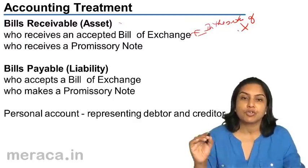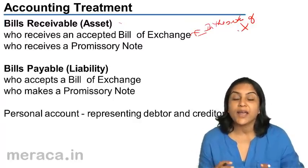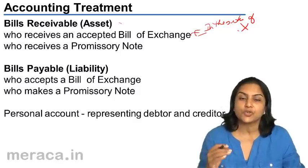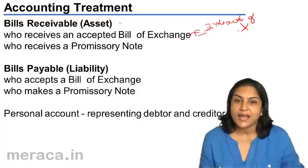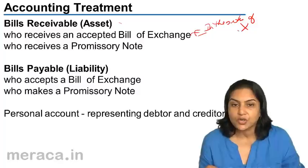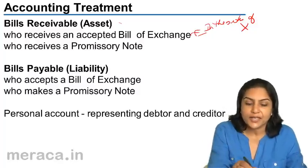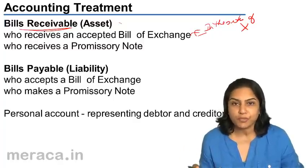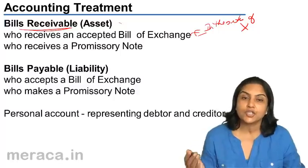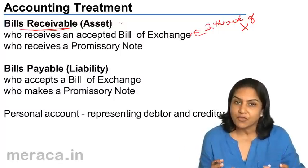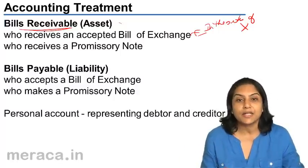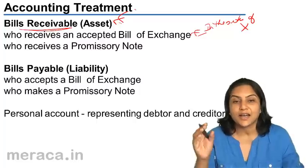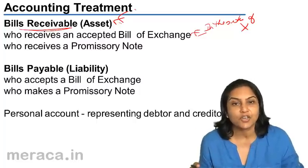Similarly, if X had sold goods to Y and Y signed a promissory note promising to pay X after three months, in X's books this promissory note would also be recorded as a bill receivable. So irrespective of whether it is a bill of exchange or a promissory note, when money is receivable, it is called a bill receivable. Bill receivable is an asset.